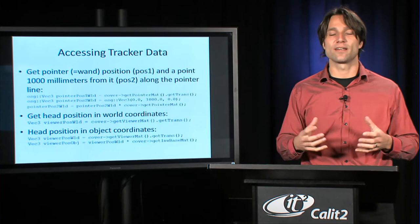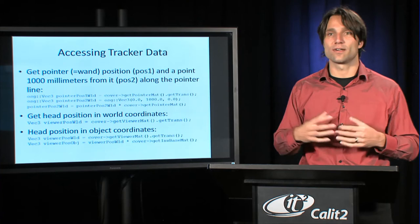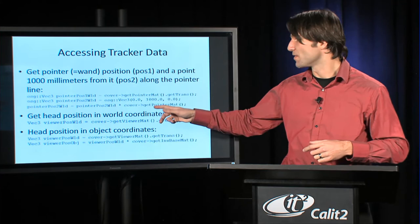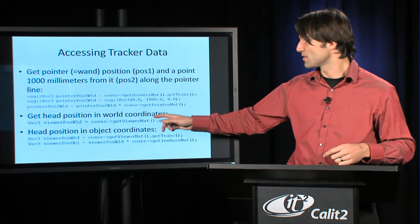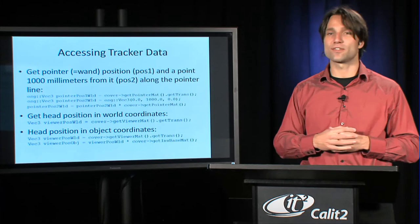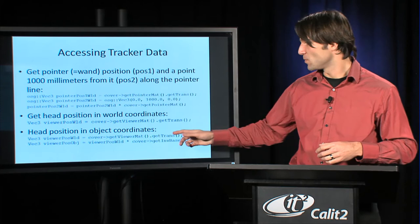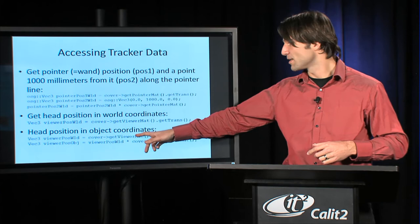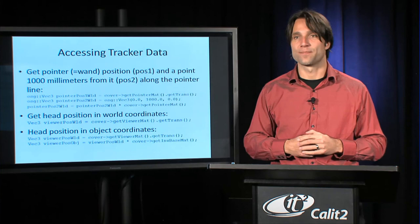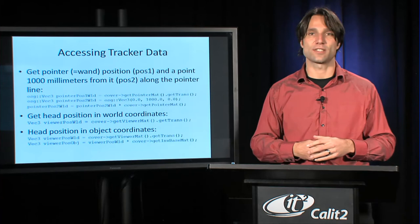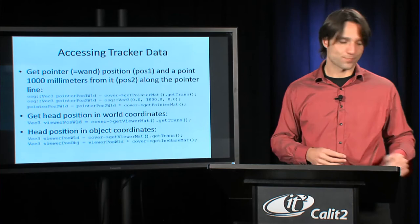What we do here is we convert this pointer position, which we originally get with getPointerMat in room coordinates. In this case, we convert that to the world coordinates by multiplying with the pointerXformToWorld variable. Now, instead of the wand position, if you wanted the head position, then what we do is instead of calling getPointerMat, we'll call getViewerMat, and the rest is the same thing. If we wanted the head position in object coordinates rather than world coordinates, we would multiply the matrix that we get from getViewerMat, and we would multiply it with getInvBaseMat, which is the inverse of Covice's object space matrix. That's how you can get your viewer coordinates into object space, so you know where in your object, in your dataset, the viewer actually is located at.